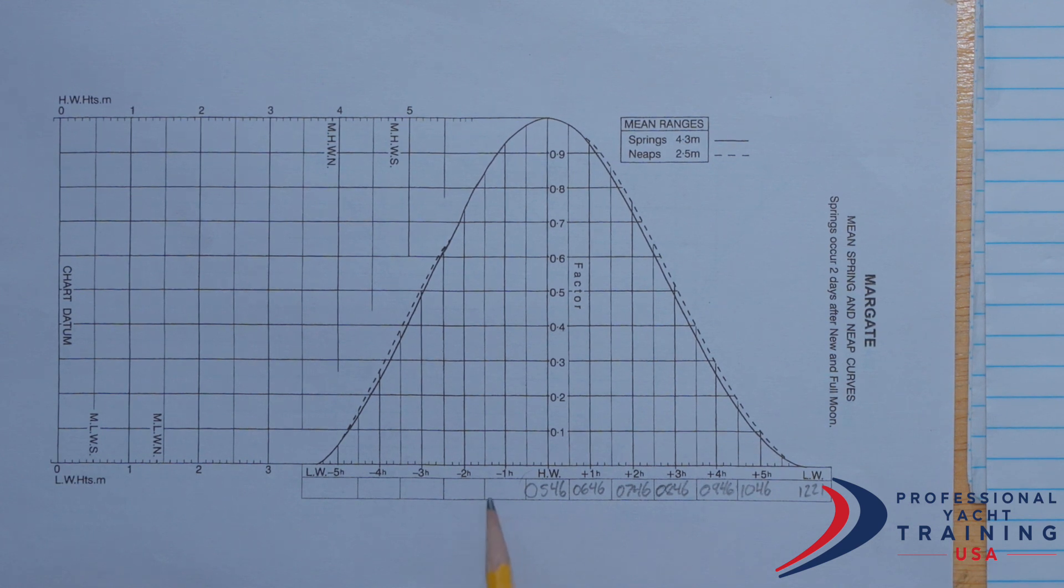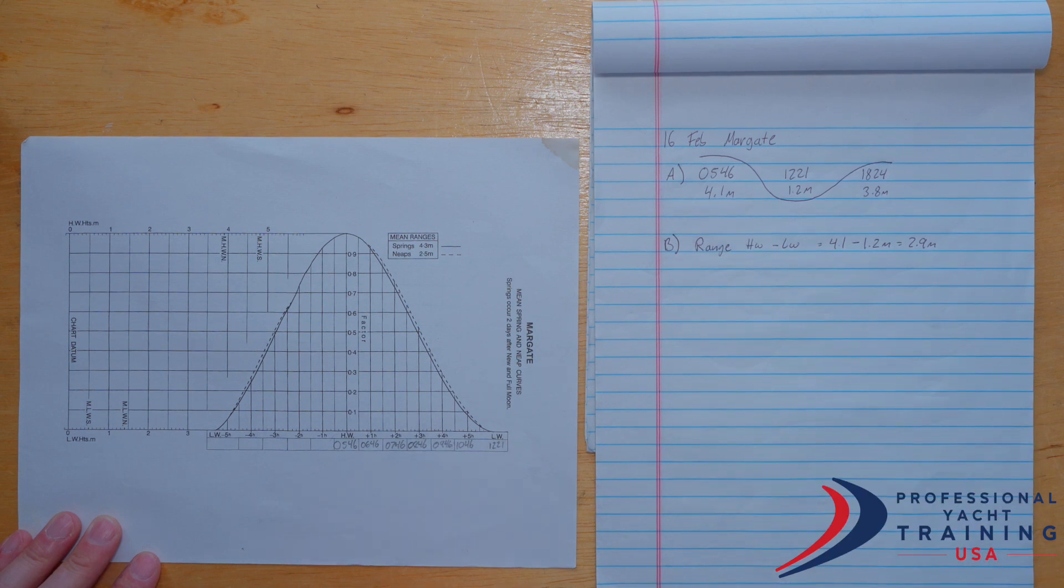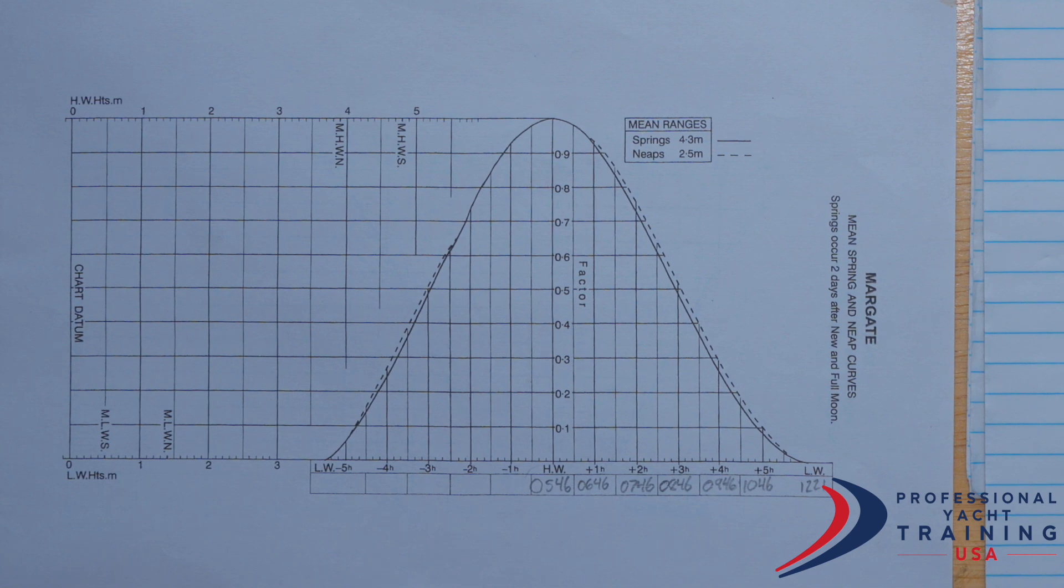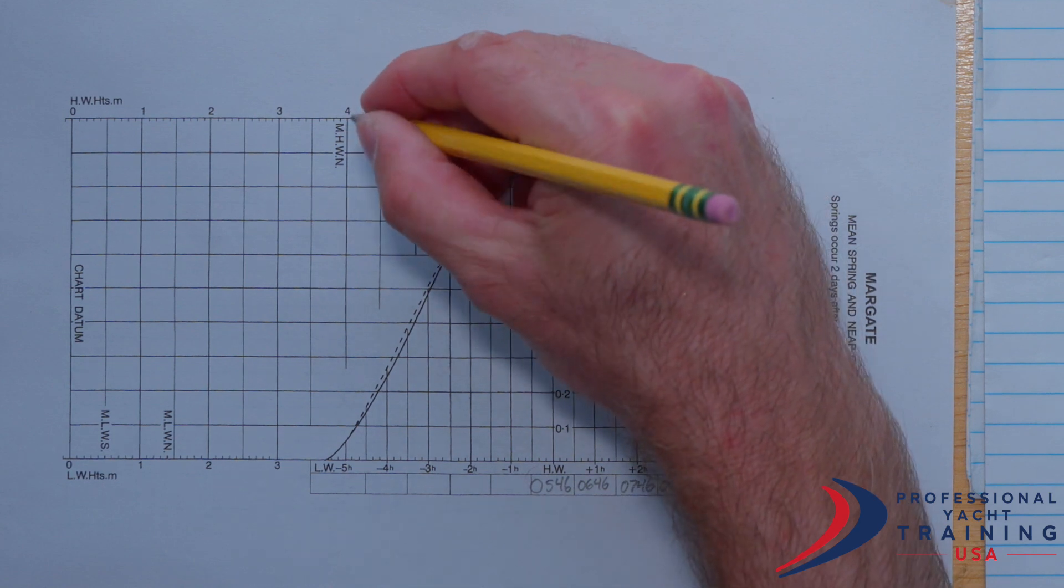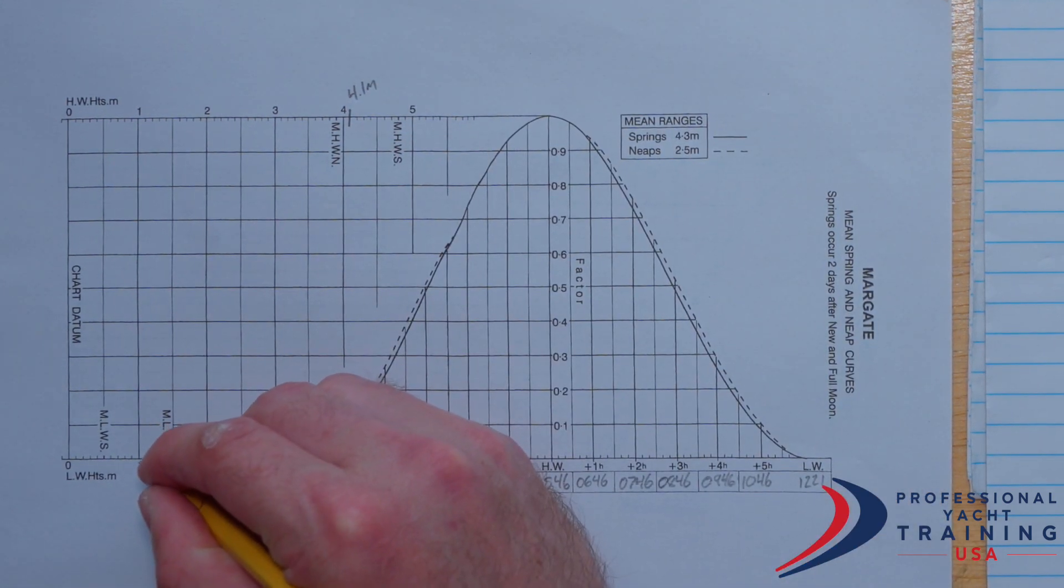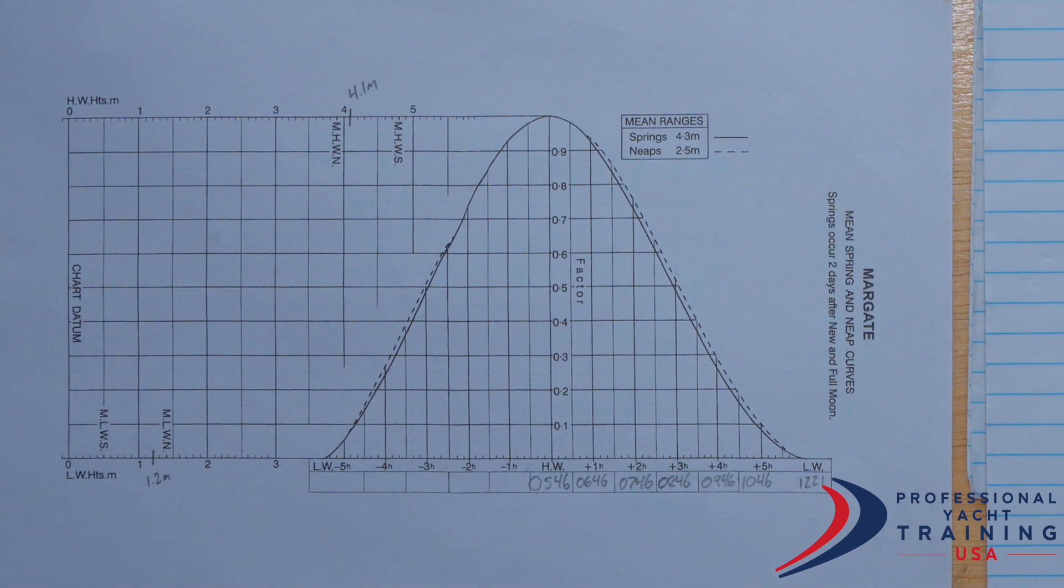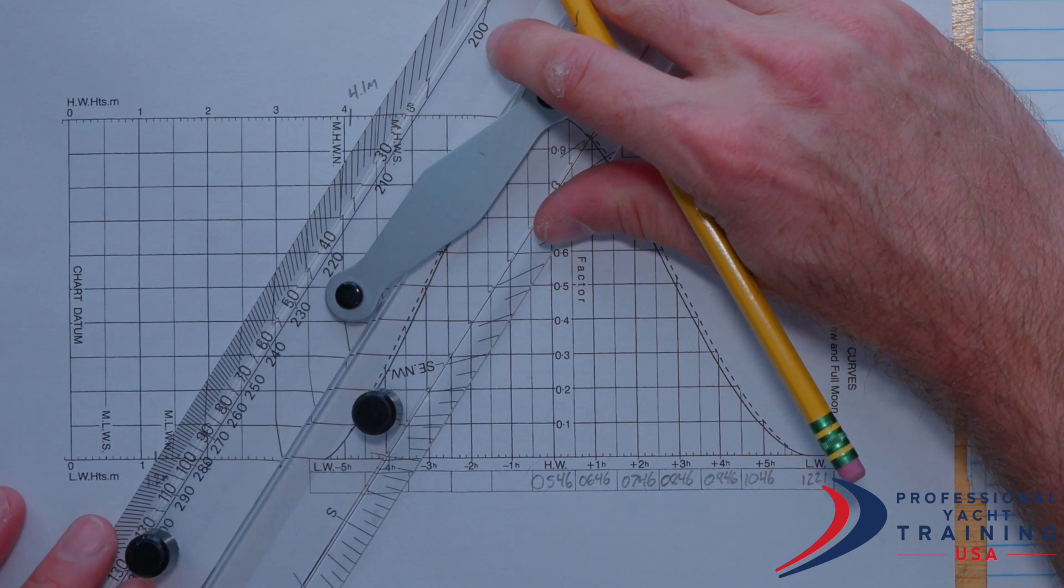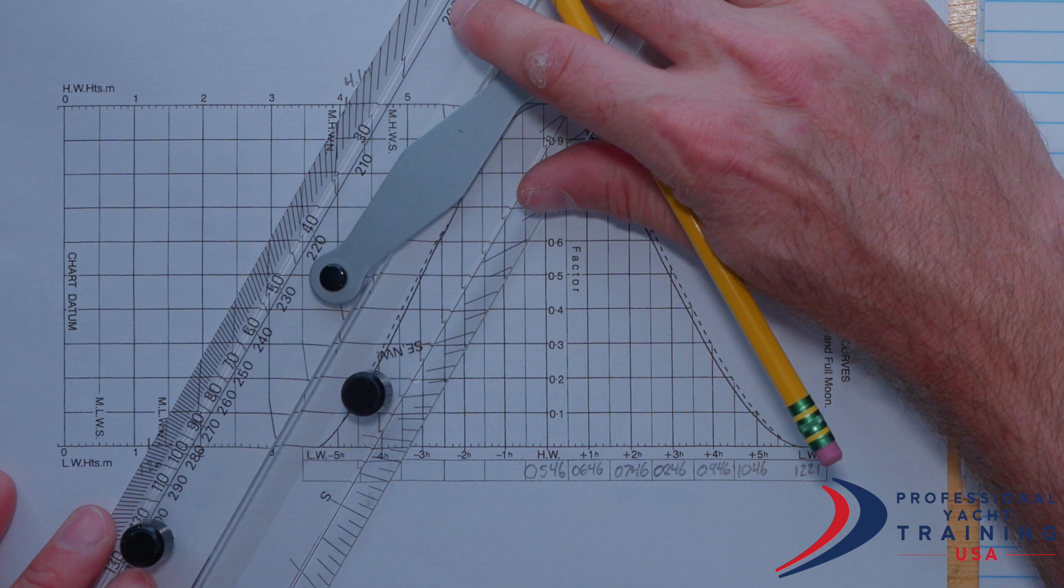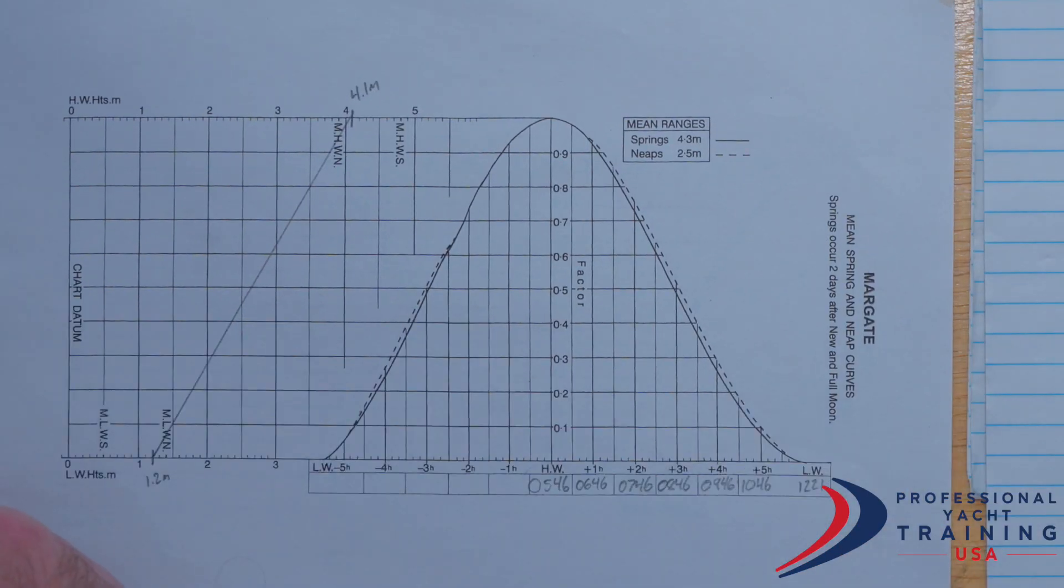Had I been working with a flood tide, I still would have started with that high water time and just worked backwards from there. The other given data that I have at this stage is I have the 4.1 meter high water height and the 1.2 meter low water height. On the left side of the curve, they give us space for high water and low water heights. And at Margate, 4.1 meters of high water will be right here. So I'm going to mark that and note it, 4.1 meters. And 1.2 meter low water height will be right here. So we'll mark that and note it. Once I've done that, I can utilize rules to connect those two points. What this represents is the linear change in depth from 1.2 meters up to 4.1.